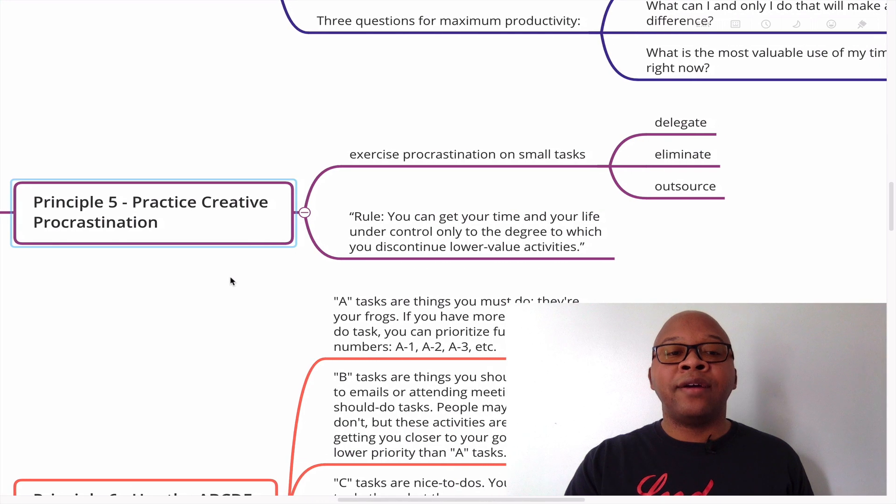Principle number five is practice creative procrastination. Yes, it's okay to procrastinate. But you want to exercise procrastination on small tasks, on the low value tasks, on the unimportant tasks.